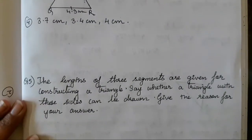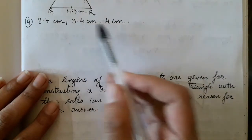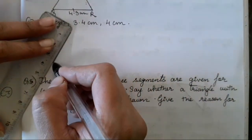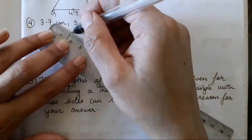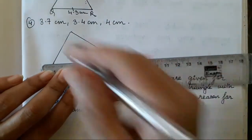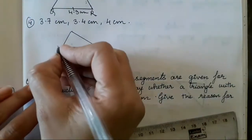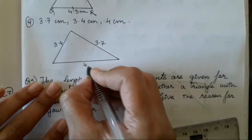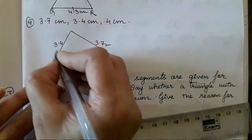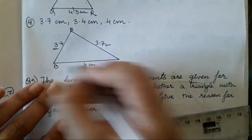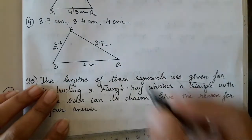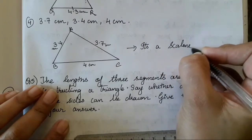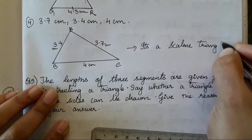Now question number 4: sides are 3.7 cm, 3.4 cm, and 4 cm. All three sides are different. We name this triangle ABC, marking the sides as 3.4, 3.7, and 4 cm. Since all three sides are different, it is a scalene triangle.